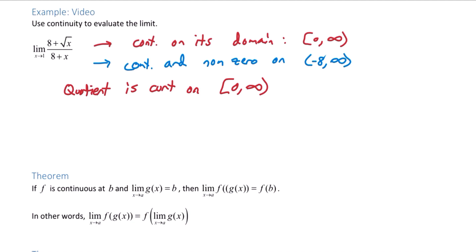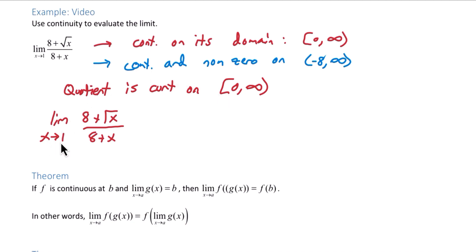With this information, we can now look at the limit. The limit as x approaches 1 of 8 plus the square root of x over 8 plus x. Since it's continuous on zero to infinity, and we're looking at 1, we can plug in the 1. 8 plus the square root of 1 over 8 plus 1, that is 9 over 9, or 1. Let's go.